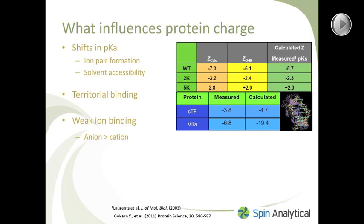Shown on the right-hand side is a double-stranded DNA, and that purple wiggly spaghetti-like track comes from a sodium ion — it's a model of a sodium ion from a one-nanosecond simulation of a sodium ion in the vicinity of the DNA. This also occurs for proteins. Look at Factor 7a, a blood-clotting factor: the calculated charge is near minus 20, but the charge that we actually measure is closer to minus 7.